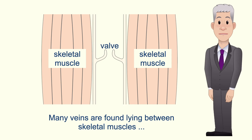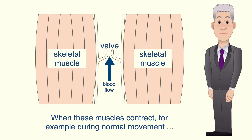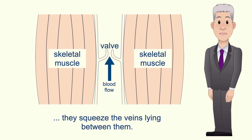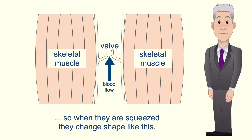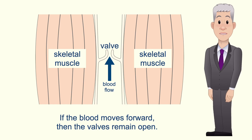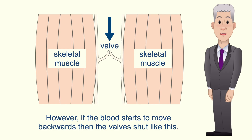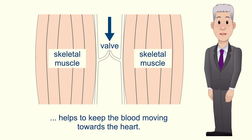Many veins are found lying between skeletal muscles such as the large muscles of the arms and legs. When these muscles contract during normal movement they squeeze the veins lying between them. Veins have a relatively thin wall so when they're squeezed they change shape. This squeezing forces the blood along. If the blood moves forward then the valves remain open. However if the blood starts to move backwards then the valves shut. So the combined effect of the muscles squeezing the veins as well as the action of the valves helps to keep the blood moving towards the heart.